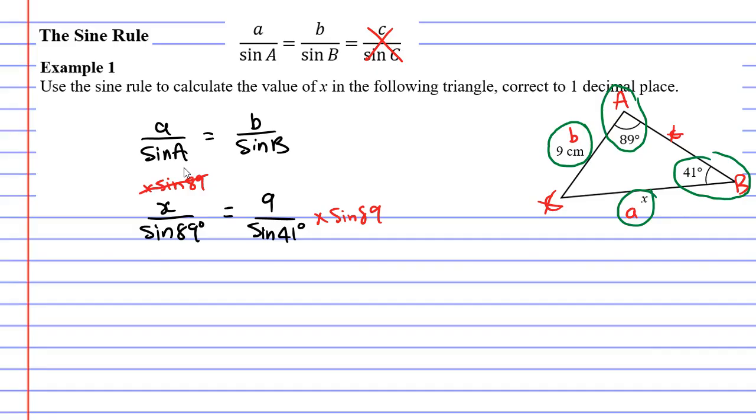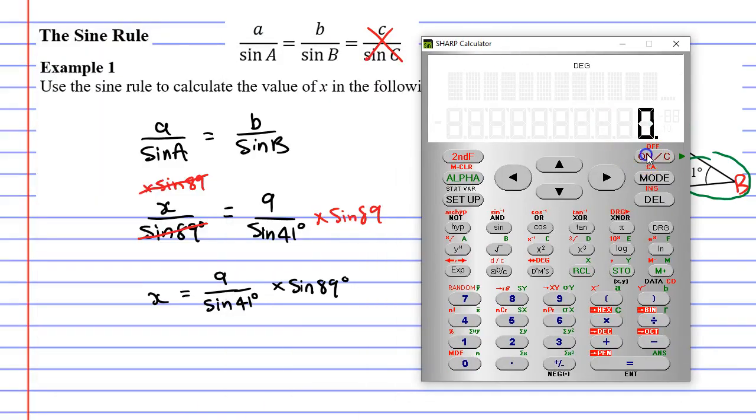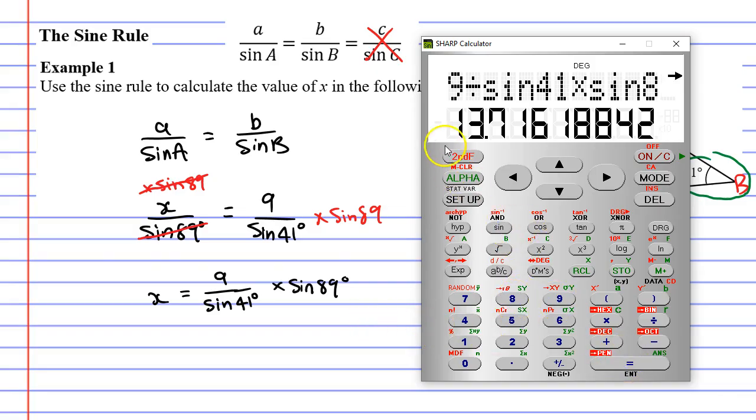On the left hand side, we're going to cancel sine 89, which is good because now we have x on its own. And on the right side we'll write it as 9 over sine 41 degrees times sine 89 degrees. We can just work it out on our calculator now. 9 divide sine of 41 degrees times sine of 89 degrees equals, and we get 13.7.